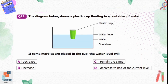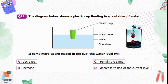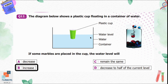Question number twelve: the diagram below shows a plastic cup floating in a container of water. If some marbles are placed in the cup, the water level will option A, decrease; B, increase; C, remain the same; D, decrease to half of the current level. If we add marbles, the cup will move towards the base of the container and the water level will increase. Option B is correct.